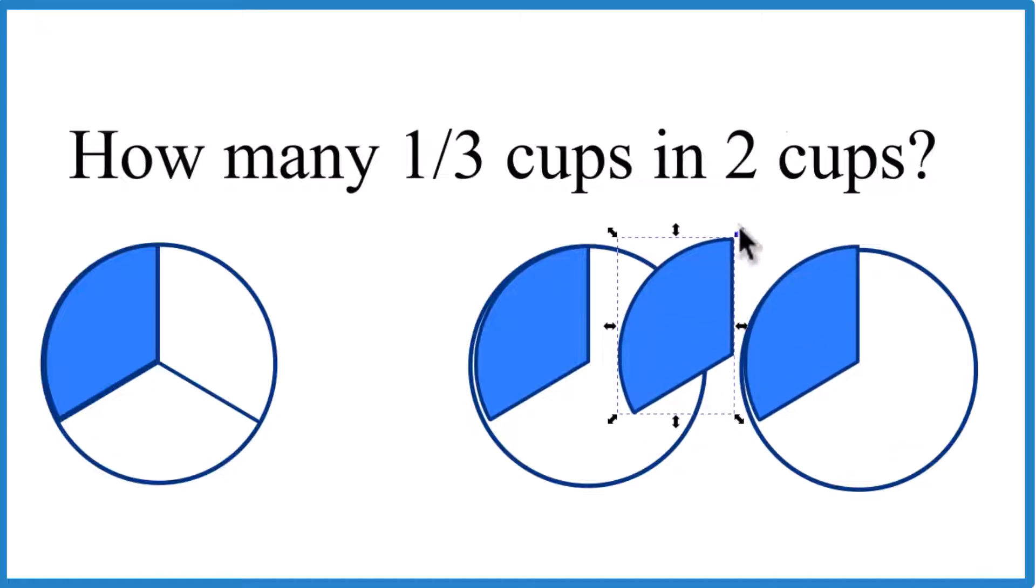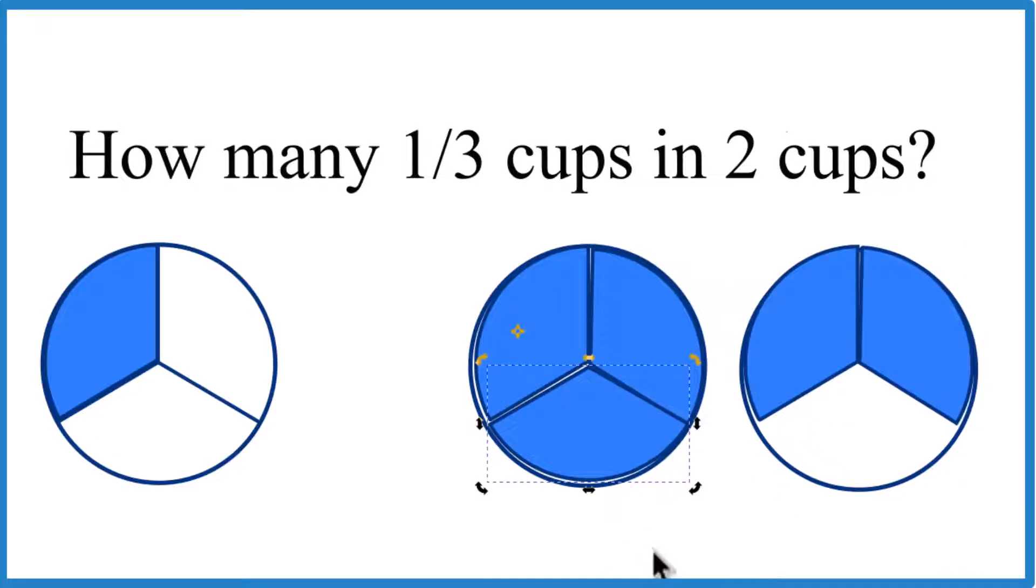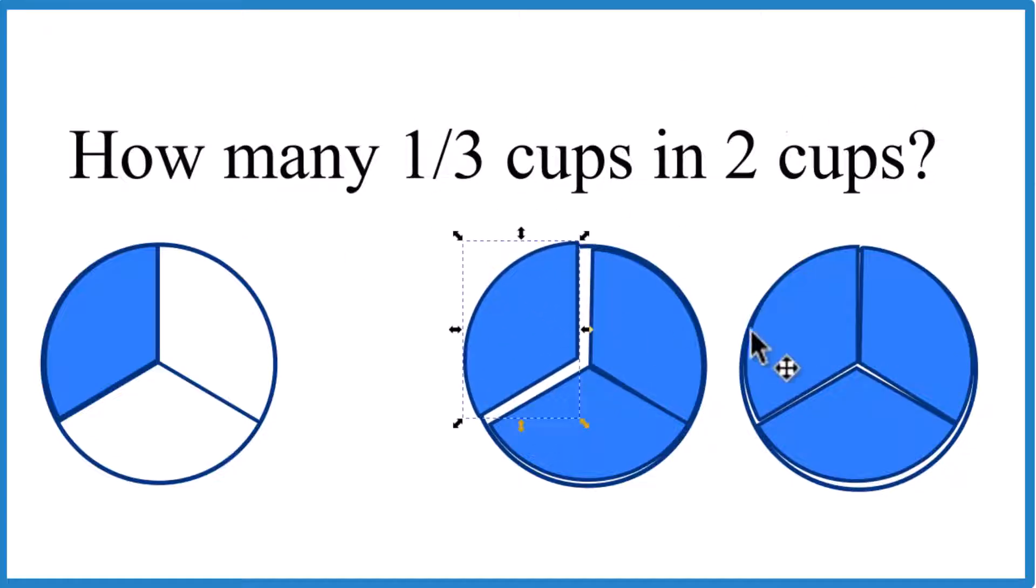Three. Let's rotate that. Four. Five. And six. So there are six of these one-third cups in two full cups.